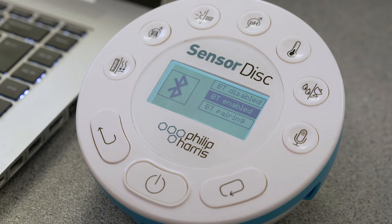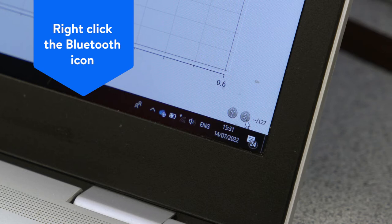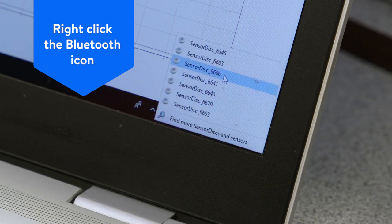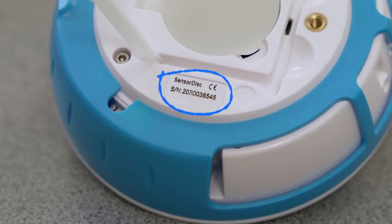If using Bluetooth communication, right click on the Bluetooth icon in the lower right corner of the sensor disk screen. Select the sensor disk you are using, identifying it using the serial number on the back of the disk.